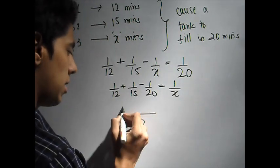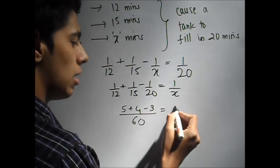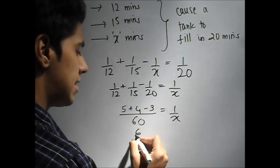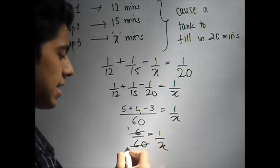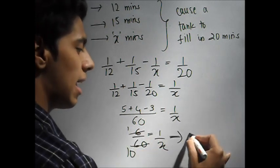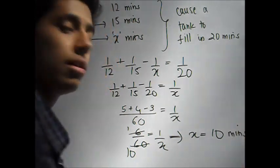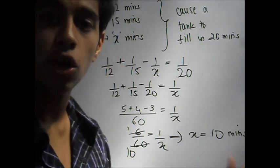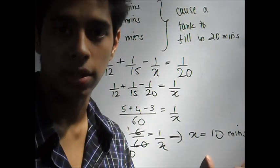You can take an LCM of 60. This will be 5 plus 4 minus 3, 1 over x. So this is 6 over 60 is equal to 1 over x. Implies x is equal to 10 minutes. Now you have to write this value. In the options, they might give you 10 minutes, 10 hours, 10 seconds. You need to mark the correct option. This was fairly simple.